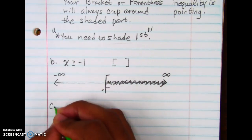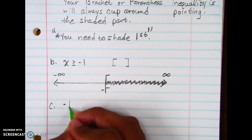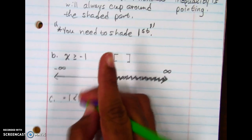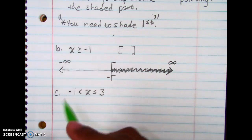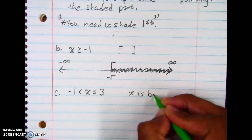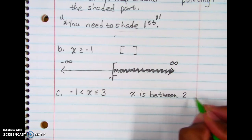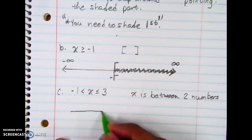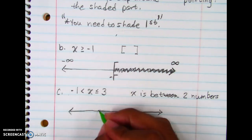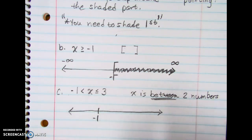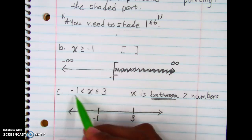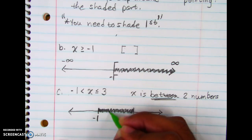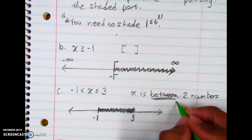For part C, this one is just a little different. Hopefully you remember what this type is called. Here, X is between two numbers — X is between negative 1 and 3. The key word is between. Since X is between two numbers, we're going to shade between those two numbers on the number line.